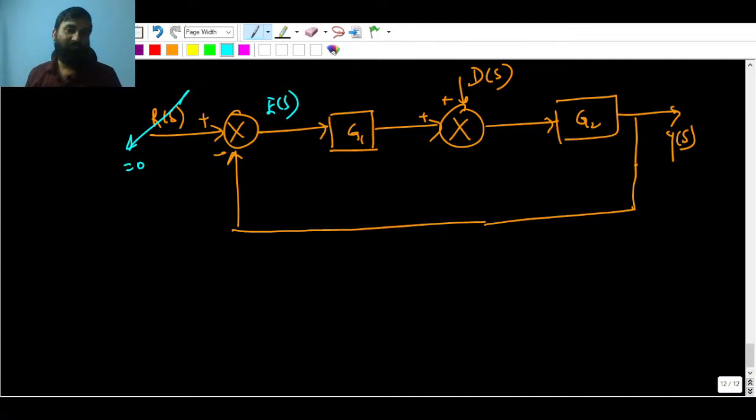Now what you can do here is, you have to make this R(s) 0 when you are trying to calculate the steady state error. I have written everything in Laplace domain. We have to use the final value theorem. Can somebody tell me that what is going to be the first step to calculate the steady state error? The very first step should be you have to calculate E(s)/D(s). If you are going to calculate E(s)/D(s), here you can say that E(s) is your output now because of this input D(s).